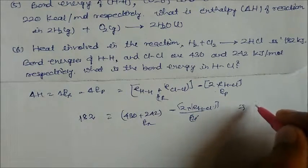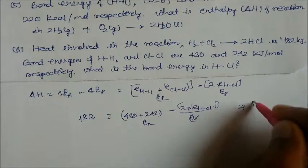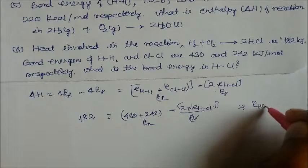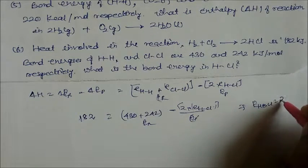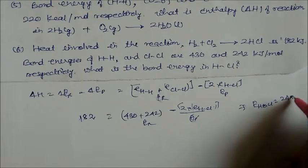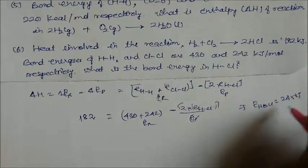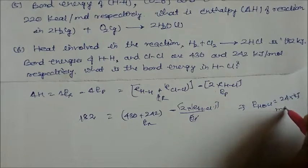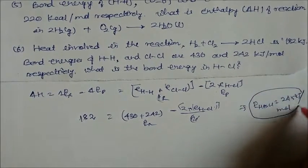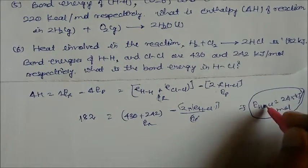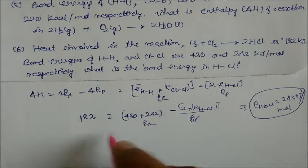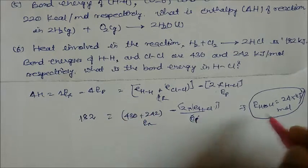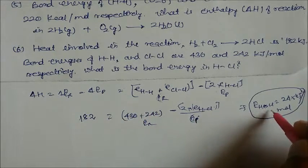On solving, the energy of HCl comes out to be 245 kilojoule per mole. So this is our answer for the bond energy of HCl.